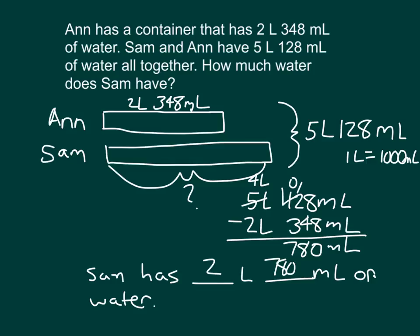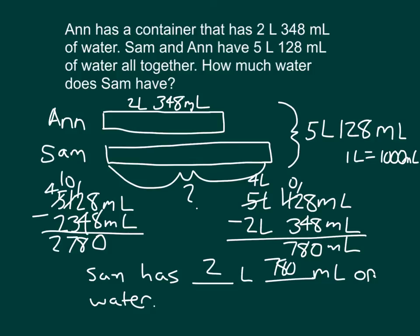Now, if I were to work through my problem another way, I could have renamed all of these to milliliters first. The 5 liters, 128 milliliters, and the 2 liters, 348 milliliters, figured out my answer in milliliters. And then, after I figured it out in milliliters, I could make a conversion back from milliliters to liters.